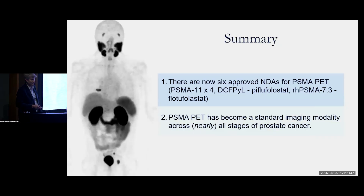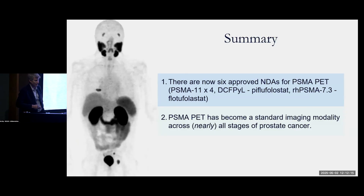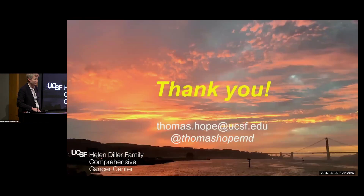Overall, PSMA PET is standard of care. There are six approved NDAs — PSMA 11, PFLU flow list, DCFPYL, Filarify, RH PSMA 7 — they're all the same in terms of how they function for patients. PSMA PET is now really the standard imaging modality for staging patients in nearly all stages of prostate cancer — from initial staging, biochemical recurrence, CRPC, to selection of patients for radioligand therapy. It has really taken over the way we image and stage patients moving forward.